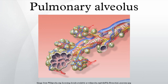Emphysema is another disease of the lungs, whereby the elastin in the walls of the alveoli is broken down by an imbalance between the production of neutrophil elastase and alpha-1-antitrypsin. The resulting loss of elasticity in the lungs leads to prolonged times for exhalation, which occurs through passive recoil of the expanded lung.